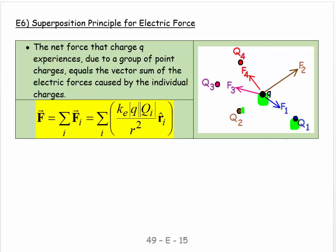Big Q2 is the same charge because Q has been repelled, big Q3 is the opposite charge, and big Q4 is the opposite charge. So each of these four vectors has a magnitude and a direction.